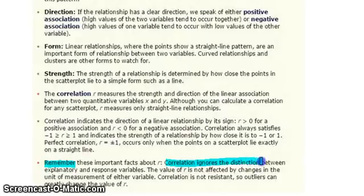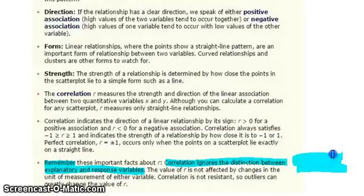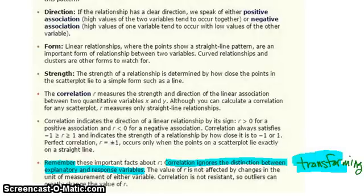Correlation does not worry about which variable is explanatory or which is response — it doesn't matter. It doesn't matter about changing the unit of measurement, and it doesn't matter when we talk about transforming. R stays the same. Lastly, correlation can be affected by outliers, so be aware of this.